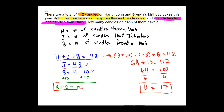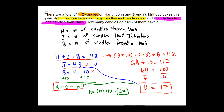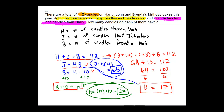How many does Harry have? By substituting back, Harry equals b plus ten, which is 17 plus ten — Harry must have 27 candles. Finally, to figure out John: j equals 4 times b, and b equals 17, so John equals 4 times 17, which is 68. The final answers are: John has 68, Harry has 27, and Brenda has 17.